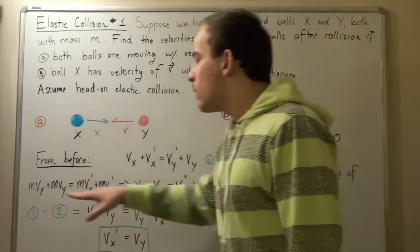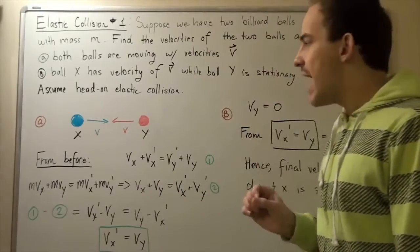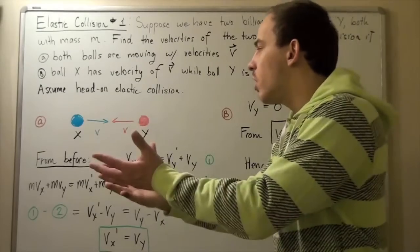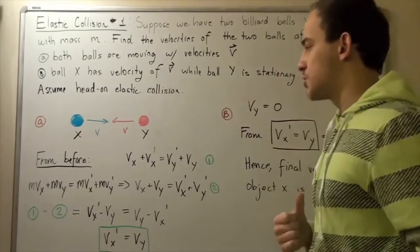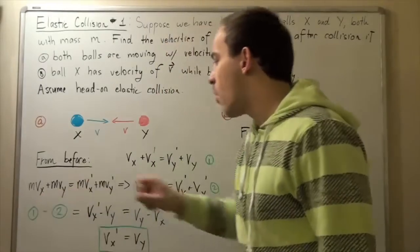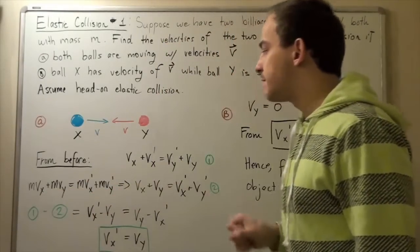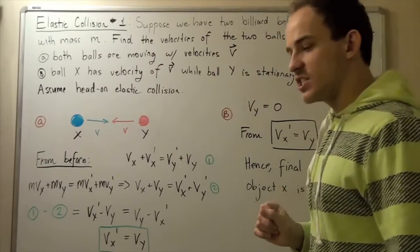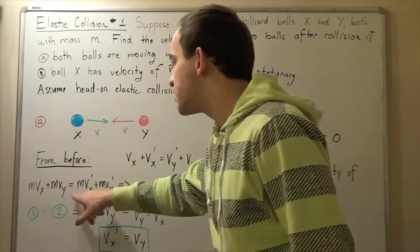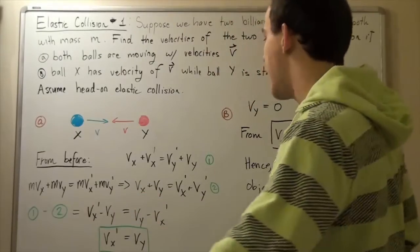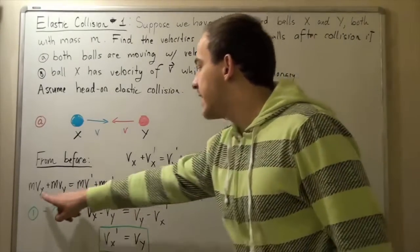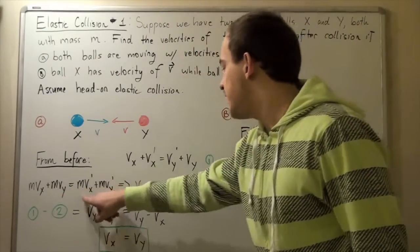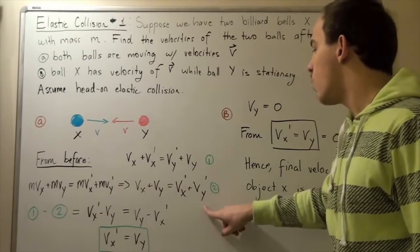We know from the conservation of momentum that momentum before equals momentum after. This is the momentum before and this is the momentum after. Note that both balls have the same mass, so we can divide the whole equation by m and we simply get vx + vy = vx' + vy'.